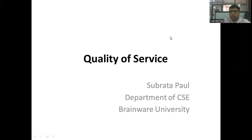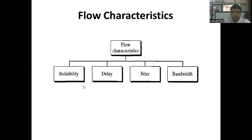Hello, today I am going to discuss about quality of service. A stream of packets which is being transmitted from the source node to destination node is referred to as the flow. This flow is determined by various characteristics like reliability, delay, jitter, and bandwidth. The ability of the network to deliver packets from source node to destination node, defined on the set of these four parameters, is known as quality of service.